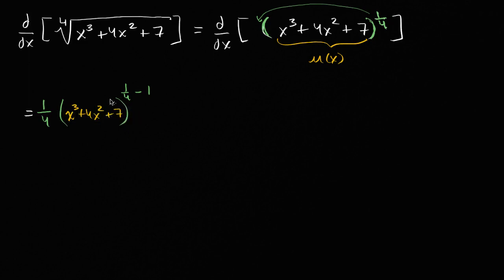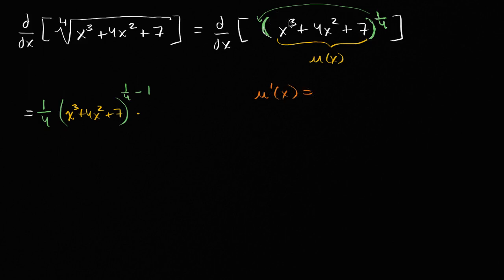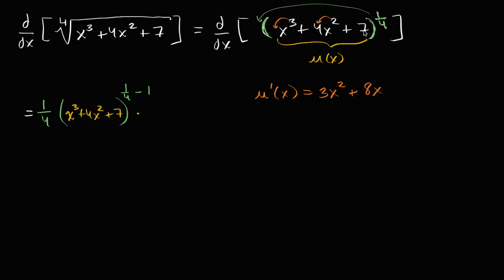And then I multiply that — this is the chain rule — I took the derivative of the outside with respect to the inside, and now I multiply by the derivative of the inside. So what's the derivative of u of x? Using the power rule: it's three x squared, plus two times four is eight x, and the derivative of seven is just zero. So u prime of x is three x squared plus eight x.